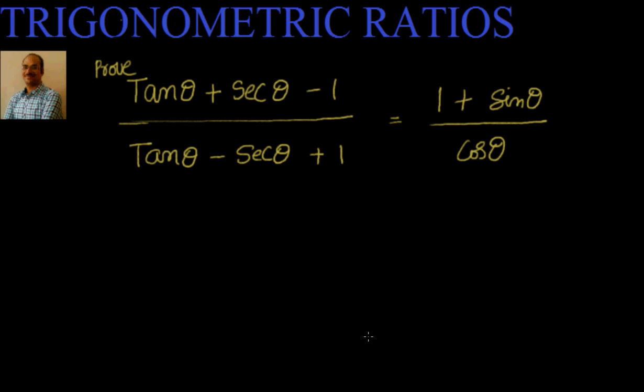Hi, a warm welcome to you. We are solving problems on trigonometric ratios. In the earlier videos we have solved problems where we worked on negative angles and angles of type n pi by 2 plus or minus theta. In this video we will use trigonometric identities and simplification process to prove some examples.